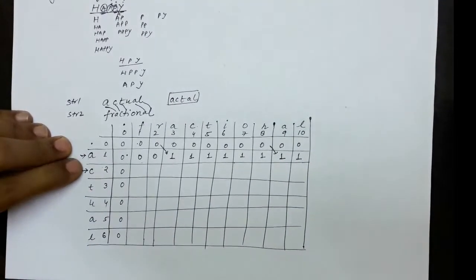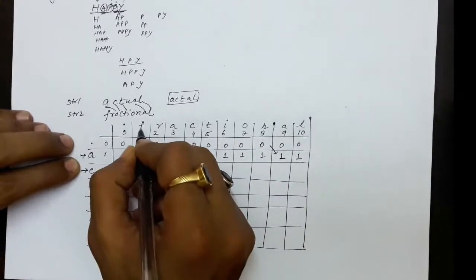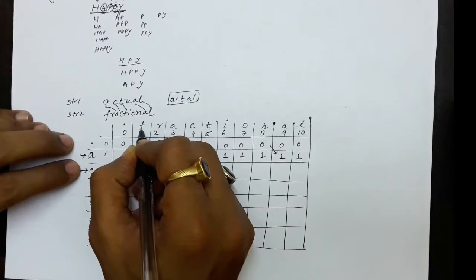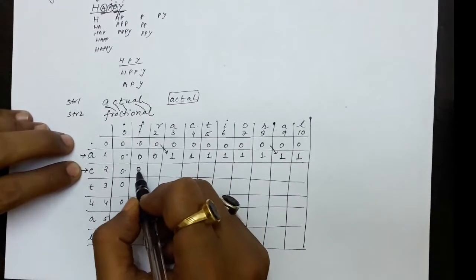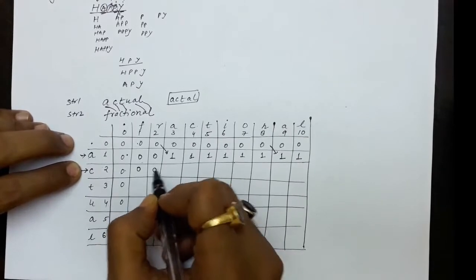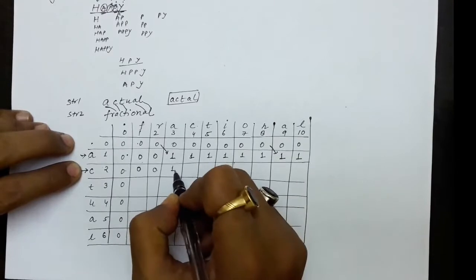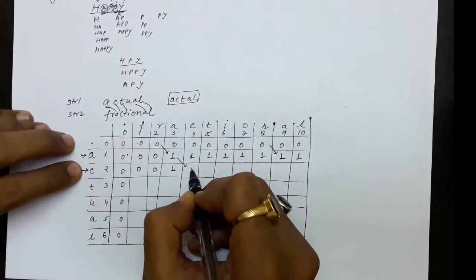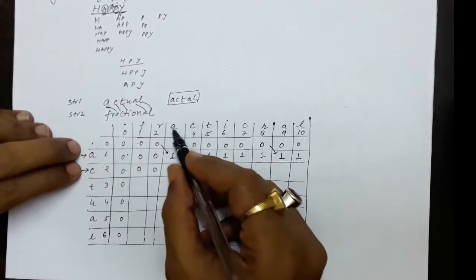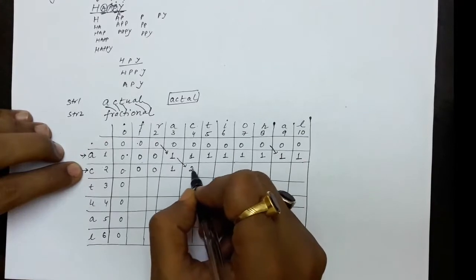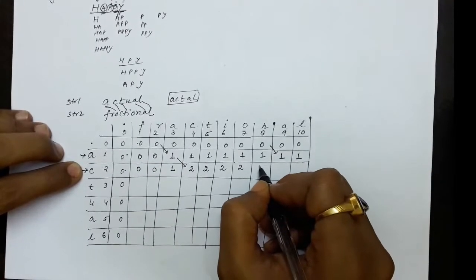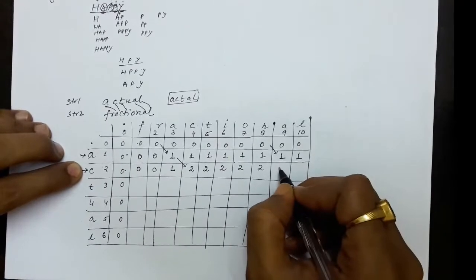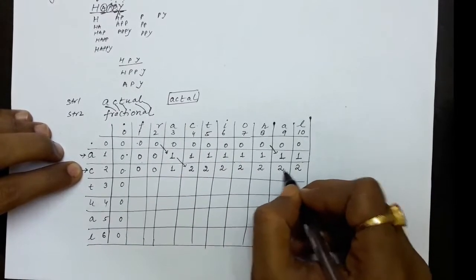Now there is a c character. We have a and c both in the first string, and we compare against the second string. C and f does not match, C and r does not match, maximum is 0. C and a does not match — maximum of 0 and 1 is 1. C and c has a match, so diagonal value plus 1 gives 2, meaning a and c have both matched. C and t does not match — maximum of 2 and 1 is 2. C and i, o, n, a, l — no match, carry forward the maximum.